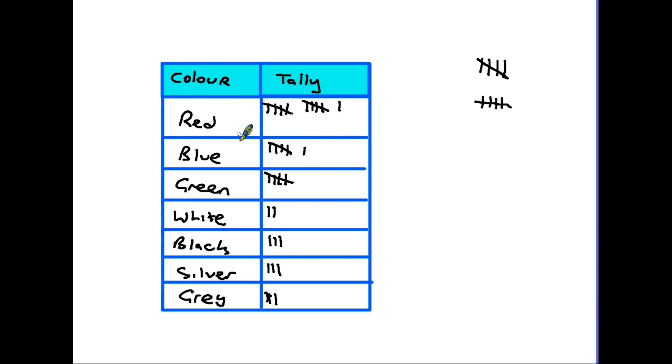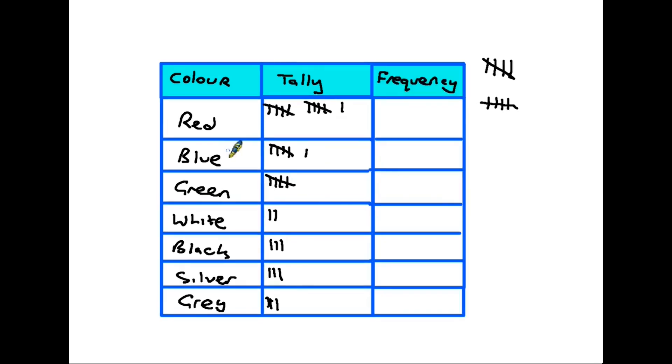Now at the moment this is called a tally chart. In fact, if we add an extra column and add a little bit more information, we can change it from being a tally chart. So here we are, I've added an extra column. It's called frequency, which simply means total number. So the frequency of red cars in this car park, five, ten, eleven. Blue cars, there were six. Five, two, three, three and three as we went down through the colors. It was a tally chart, but since we've added a third column, it is now a frequency table.